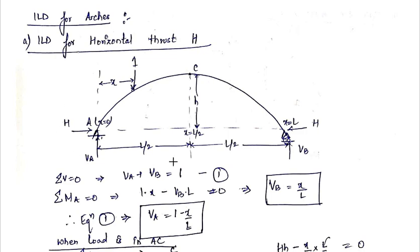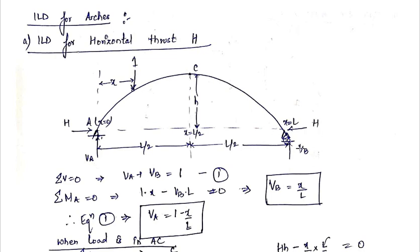In this diagram, this is your three-hinged arch A, B, and C. C is your crown point. The total span of this arch is capital L. At each support, there will be two reactions: one horizontal thrust and one vertical reaction. This is your capital H and VA at A, and capital H and VB at B.